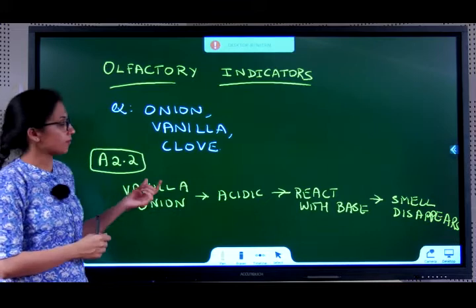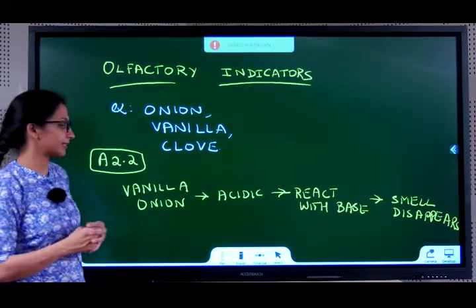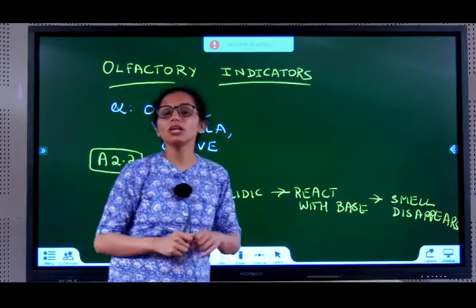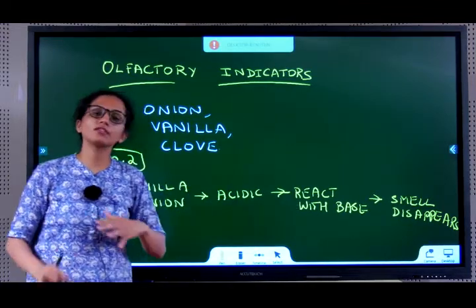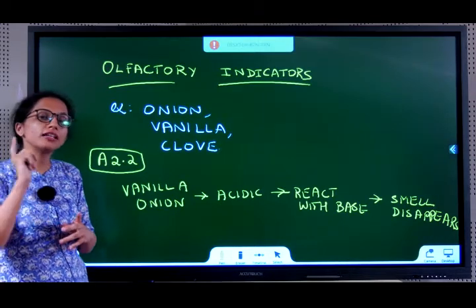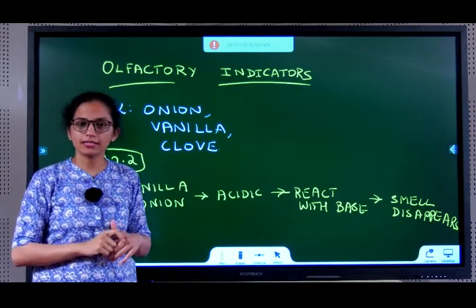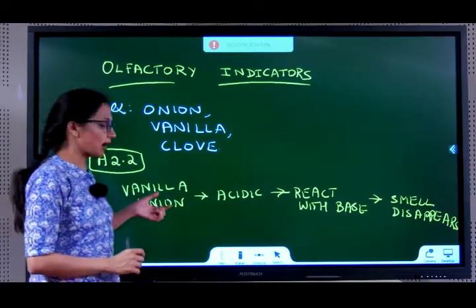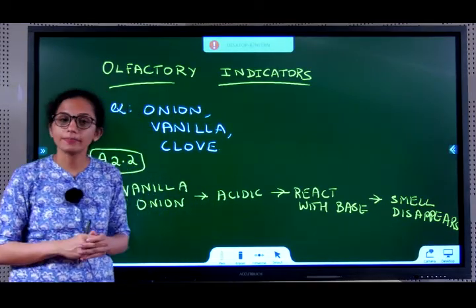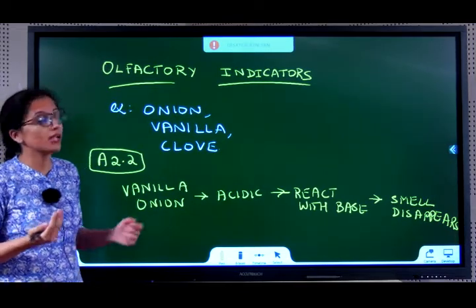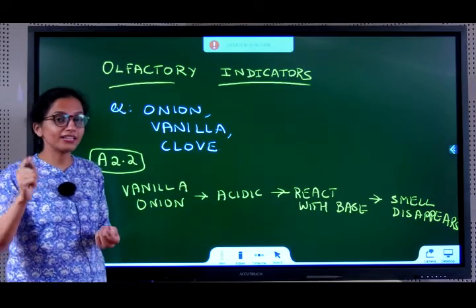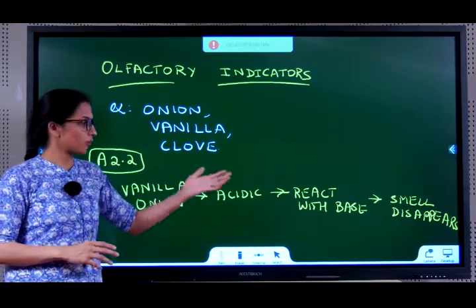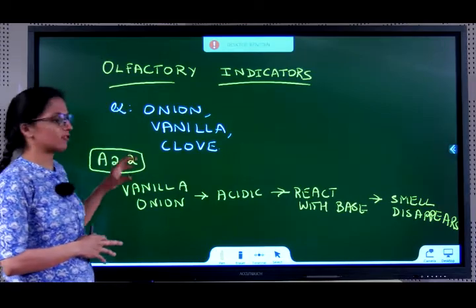You will observe that vanilla and onion are both acidic in nature. When you add their extracts to a base, their smell disappears. This is because they are acidic and when acids react with bases, a neutralization reaction occurs forming salts and water. Both onion and vanilla have strong scents, but since they are acidic, when they react with a base, their smell disappears. This is the observation from Activity 2.2.